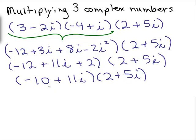So now we just do this again. Now we're going to do the FOIL method and complete the problem from here. So we have negative 10 times 2 and then negative 10 times 5i, negative 50i. 11i times 2 plus 22i. And 11i times 5i is plus 55i squared.